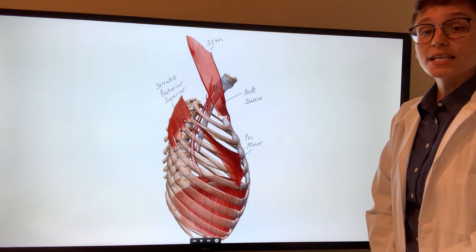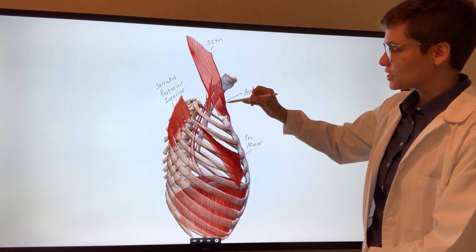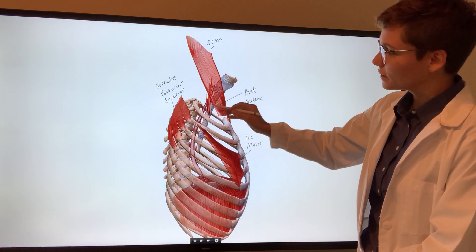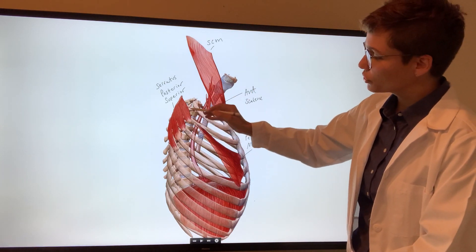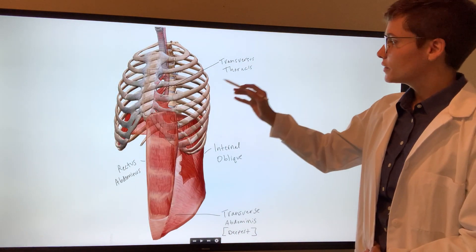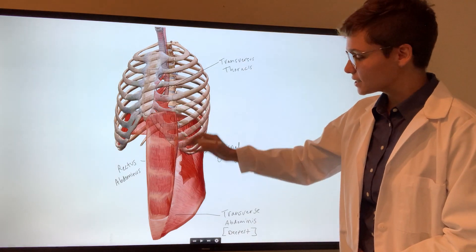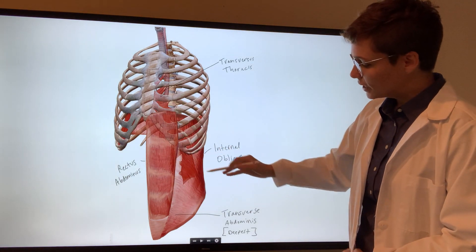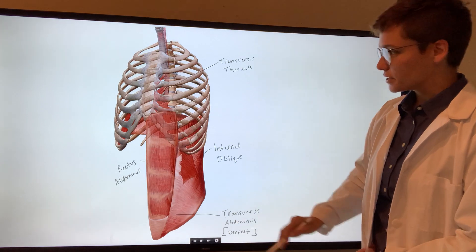Additional muscles that aid in inspiration include the sternocleidomastoid, the anterior scalene, our serratus posterior superior, and the pec minor. And additional muscles that aid in expiration include the transversus thoracis, our rectus abdominis, internal oblique, and then deeply our transverse abdominis.